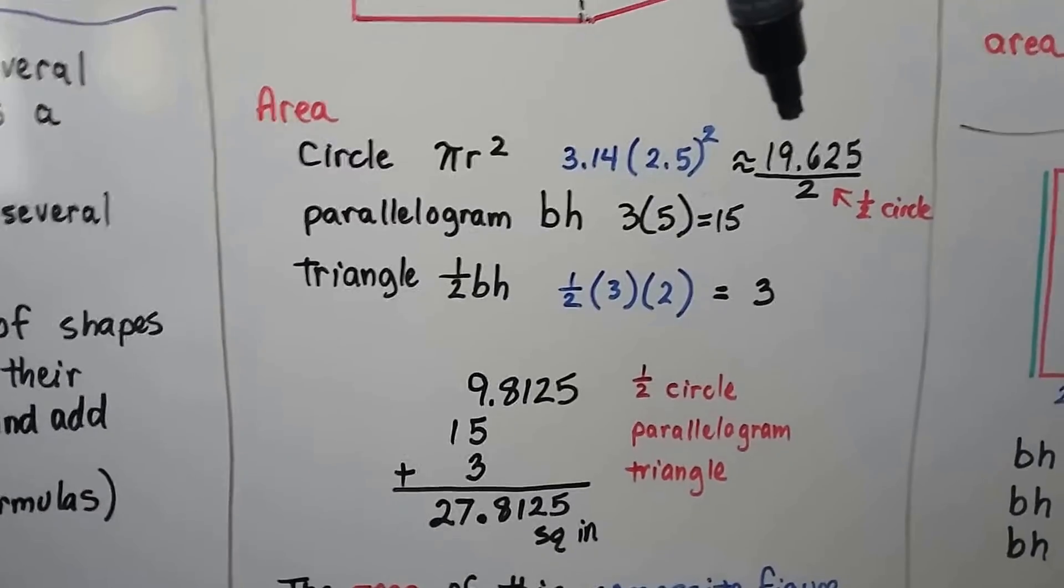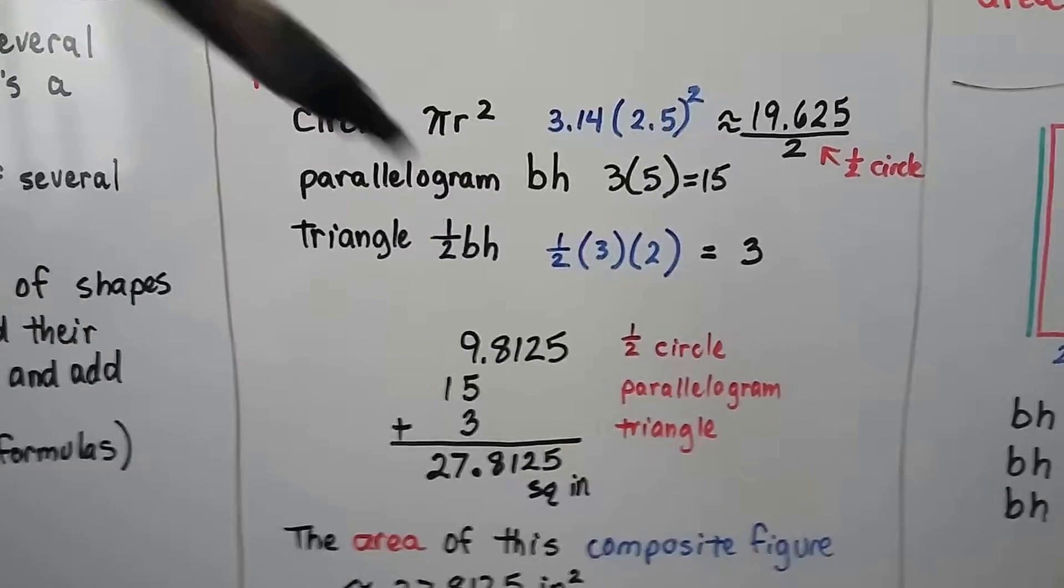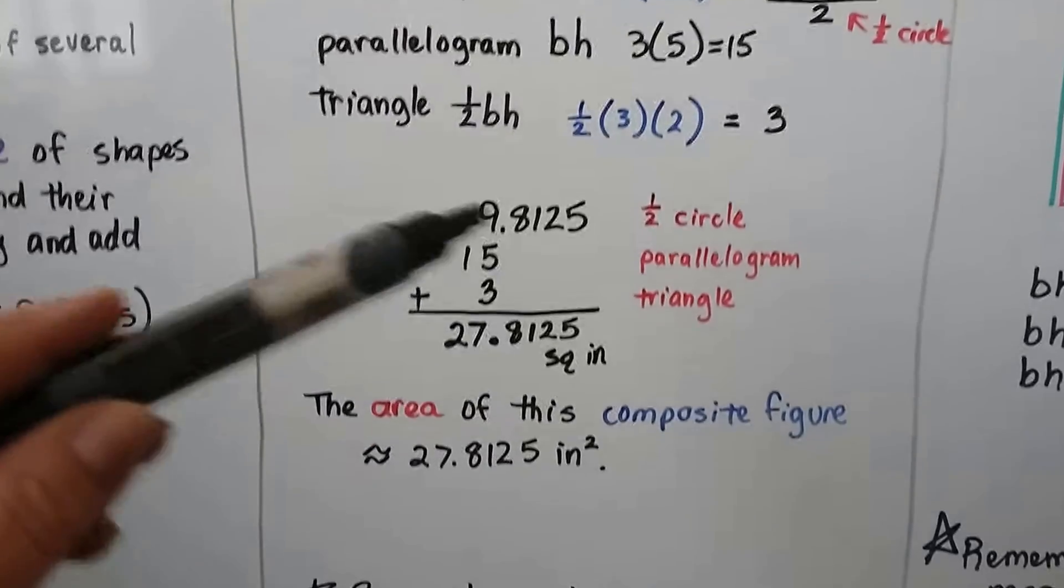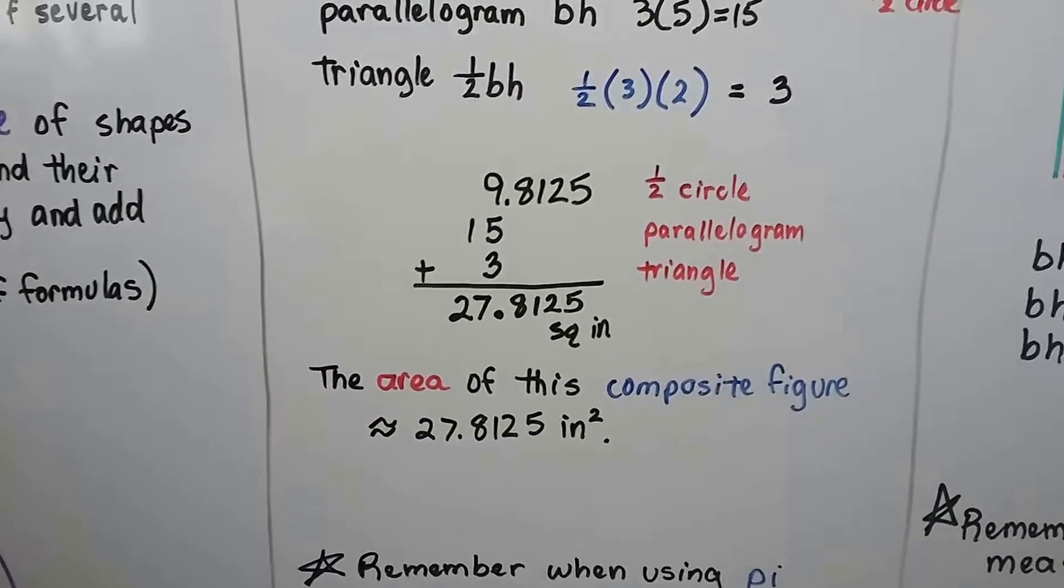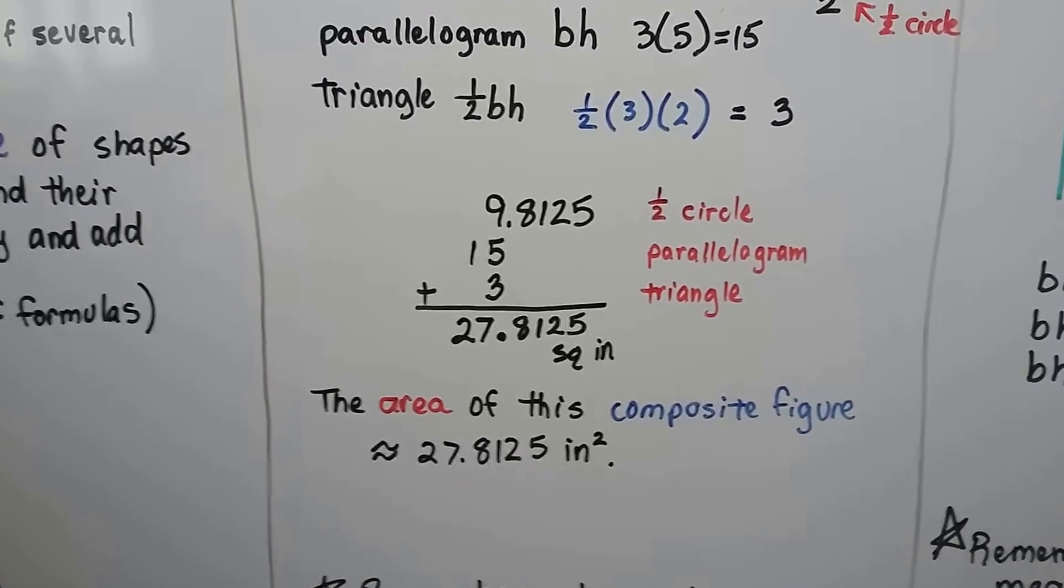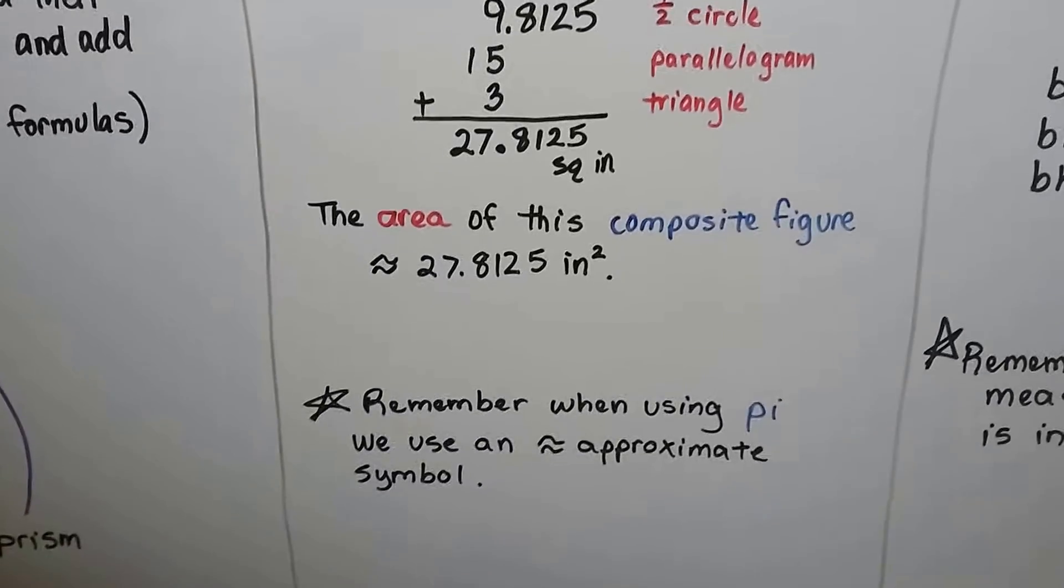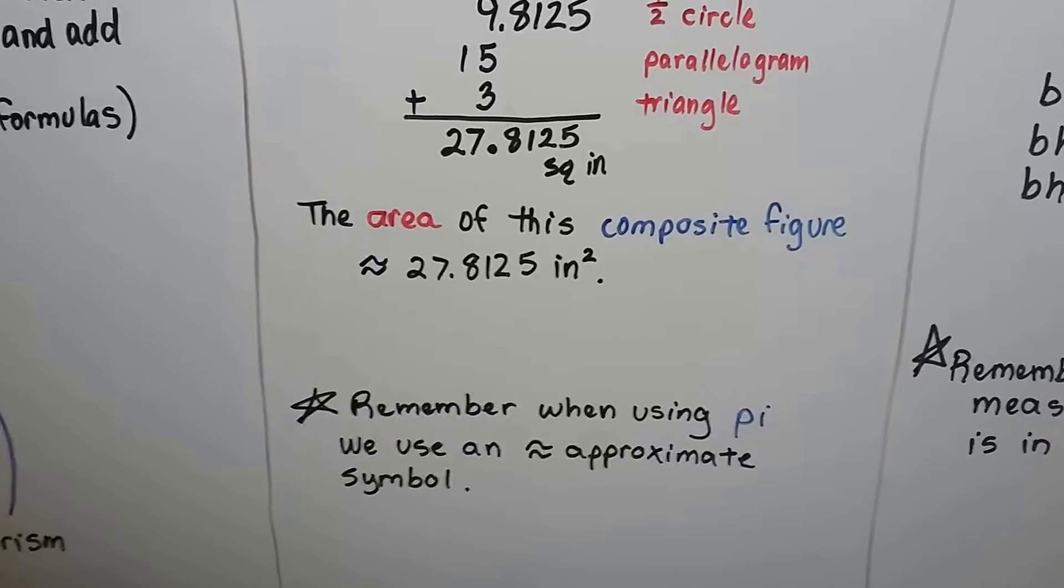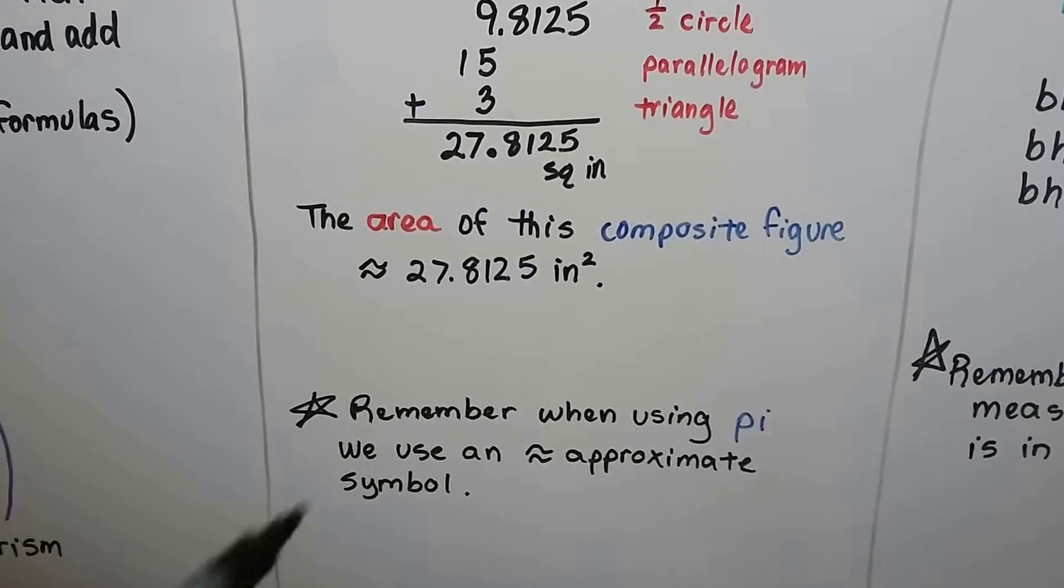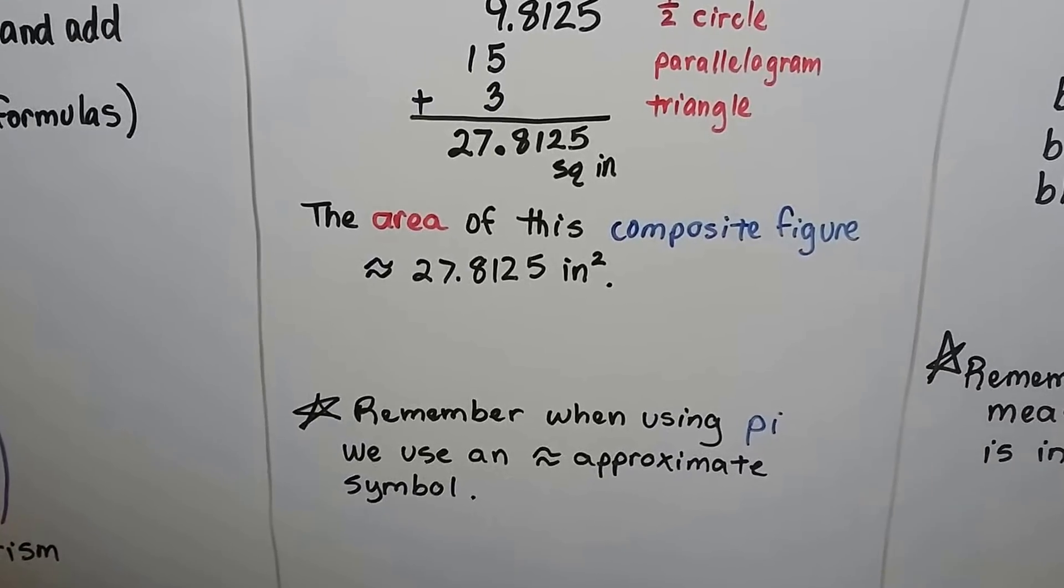The 19.625 divided by 2 comes out as 9.8125 for that half circle. Then, we have 15 for the parallelogram, that rectangle, and we have 3 for the triangle. We add them all up together, and the area of this composite figure is approximately 27.8125 inches squared. We say approximately, because remember when using pi, there's so many digits for pi, we just used 3.14 as an approximation. That's going to make all the answers approximations, and we're going to use that approximate symbol with a couple of wavy lines.